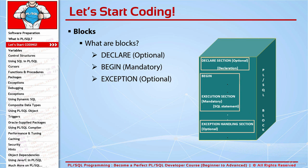The EXCEPTION section is a bit complicated for now. Your code starts working from the BEGIN keyword and continues downwards. If your code faces any problems while running, this is called an exception. If you do not handle this exception, your code crashes and terminates immediately, the rest of your code does not run, and any DML operations are rolled back.